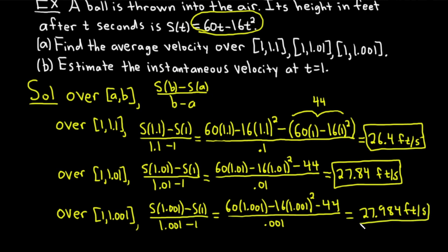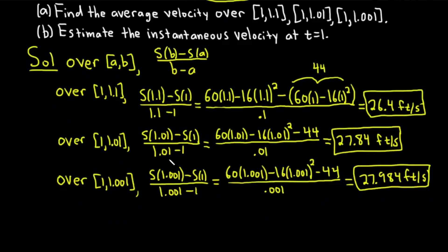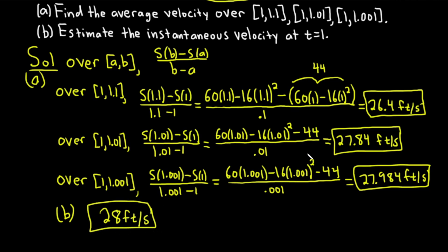That is the average velocity over [1, 1.001], completing part A. For part B, it's pretty clear that the average velocity is approaching 28, so 28 feet per second is our estimate for the instantaneous velocity at t = 1. The smaller the interval gets, the closer the approximation is to the actual velocity at that instant in time — hence the name instantaneous.